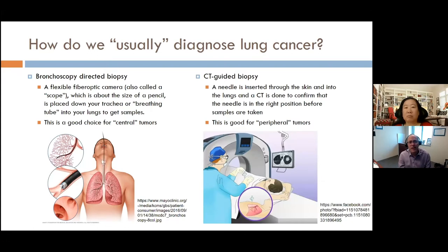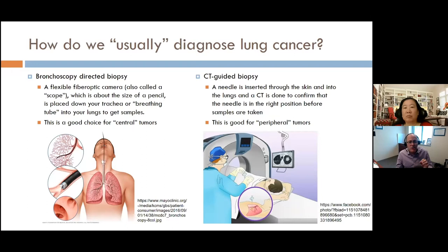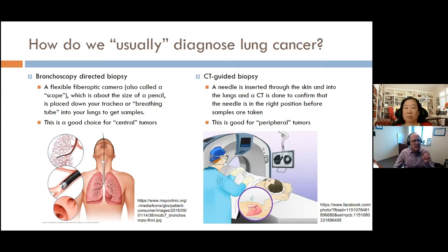The other way to get a biopsy is a CT-guided biopsy. While you're lying in the scanner, the doctor puts freezing into the skin and inserts a needle through the chest wall from the outside. Once the needle is in, another scan confirms the needle is in the right spot, and then a sample is taken. Whereas bronchoscopy is great for central tumors, CT-guided biopsy is good for tumors near the edges of the lungs, because the needle doesn't have to go in as far.